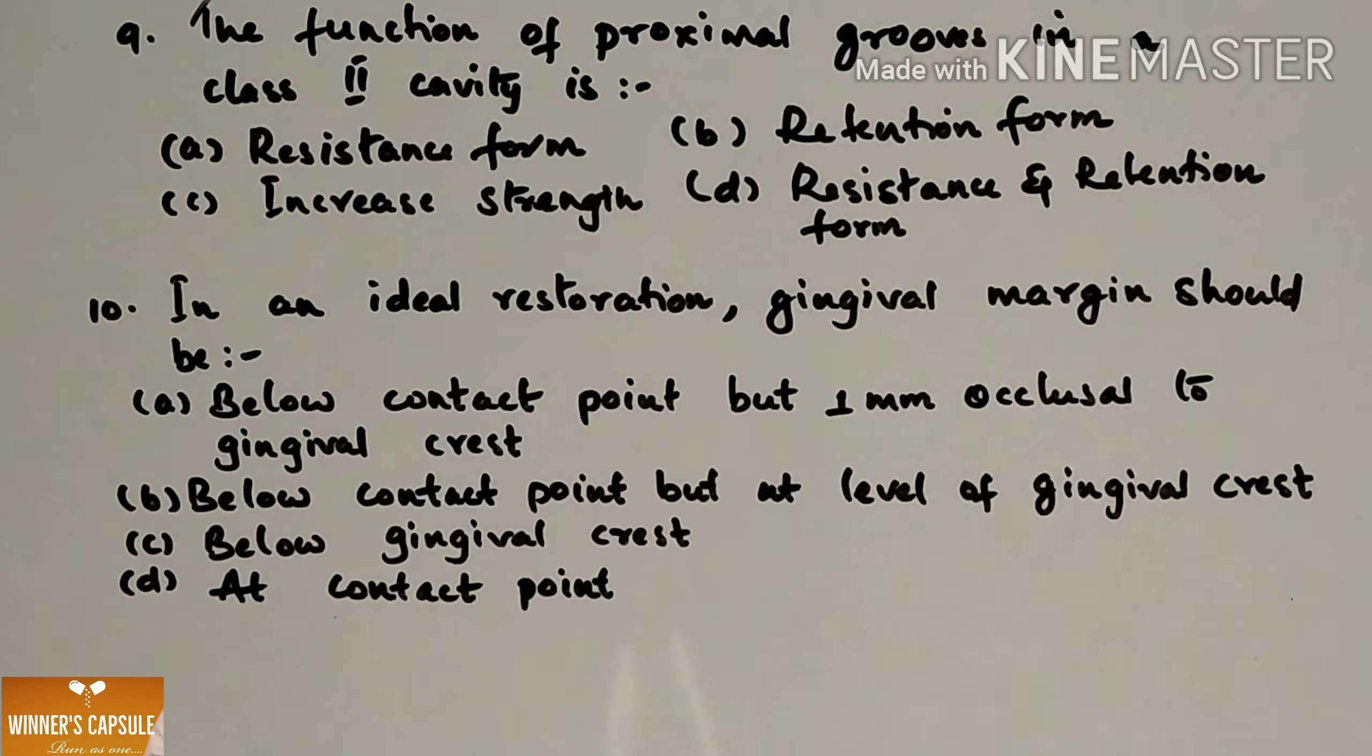Ninth one: The function of proximal grooves in a class 2 cavity is (a) Resistance form (b) Retention form (c) Increases the strength and (d) Resistance and retention form. Answer is option D, resistance and retention form.